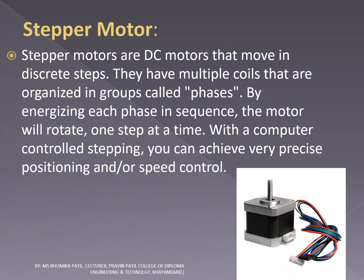Stepper motor. Stepper motors are DC motors that move in discrete steps. They have multiple coils that are organized in a group called phases. By energizing each phase in sequence, the motor will rotate one step at a time. With computer-controlled stepping, you can achieve very precise positioning and or speed control. Here is a picture of stepper motor.